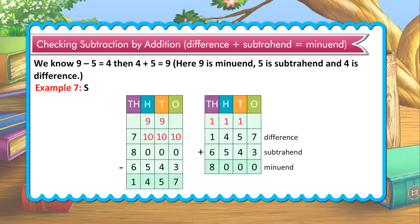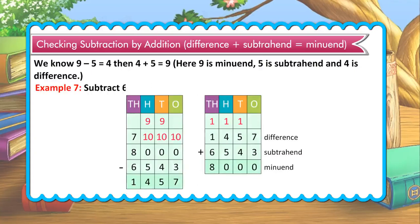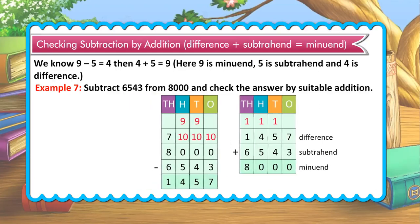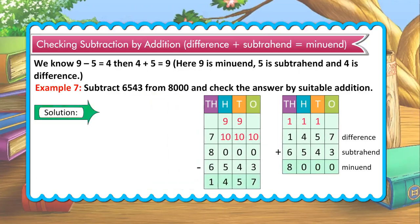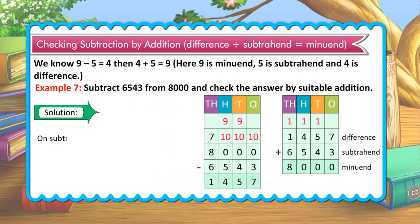Example: Subtract 6543 from 8000 and check the answer by suitable addition. Solution: On subtracting 6543 from 8000, we get 1457.